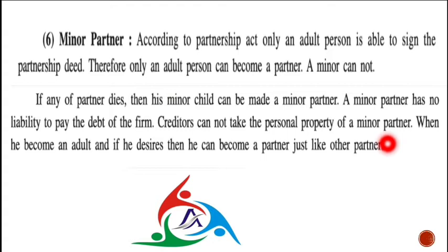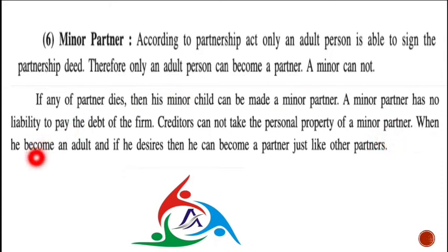As a minor partner, the child has no liability and no capital investment requirement. That is the provision regarding a minor partner. However, when he becomes an adult, and if he desires, he can become a full partner just like the other partners, with all the associated rights and liabilities.